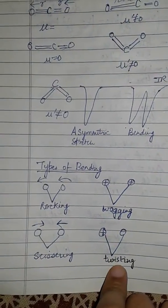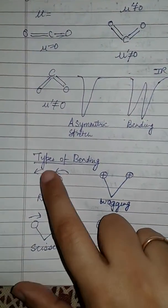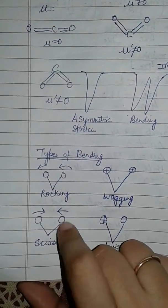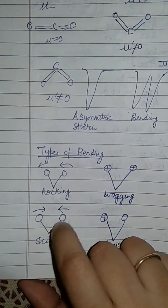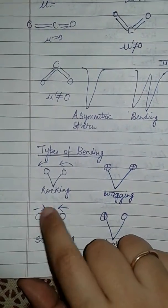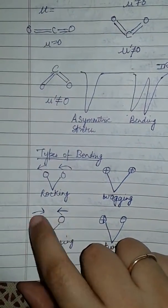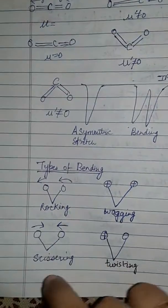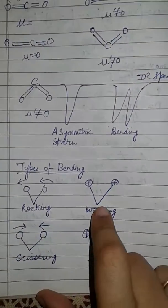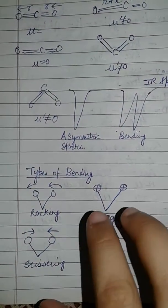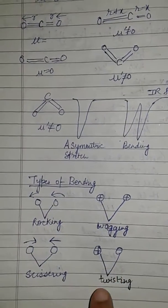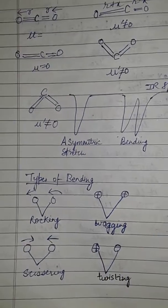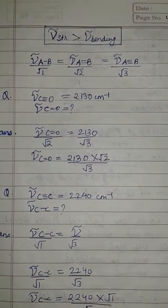There are four types of bending: rocking, wagging, scissoring, and twisting. Rocking is when both atoms go to the same side. In a triatomic molecule, scissoring is when both atoms go towards each other, and in wagging the atoms are going in and out of the plane together. In twisting, one atom goes inside the plane and one goes outside the plane.